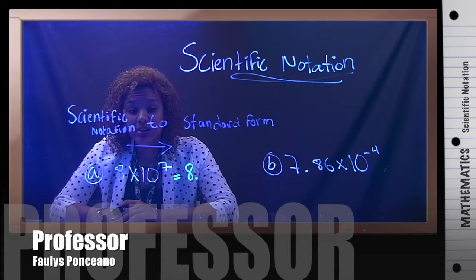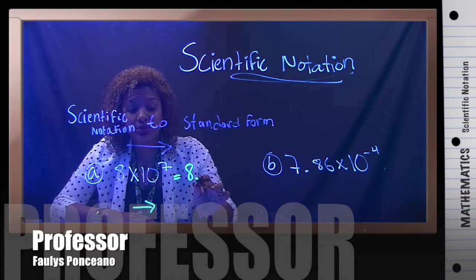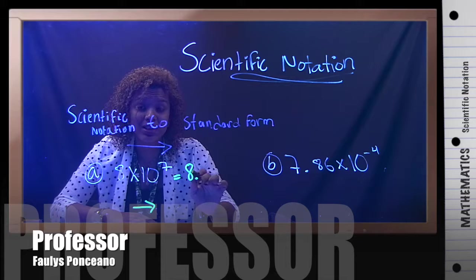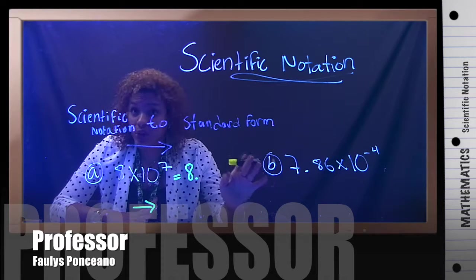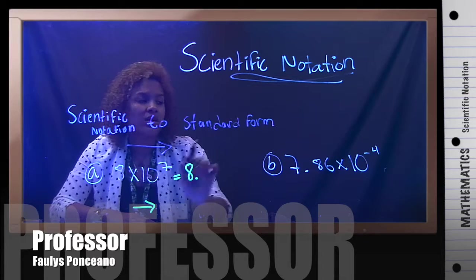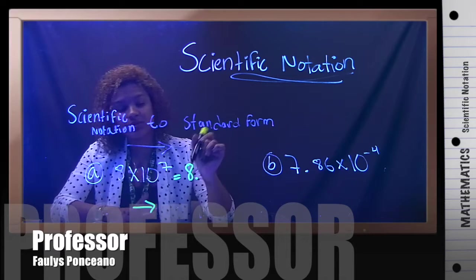When the exponent is positive, that means you're going to the right. So, from this decimal, you're going to count seven times to the right. That tells you the number of zeros you're going to add. You're going to see in example B, and I'll let you know what happens when the exponent is negative.